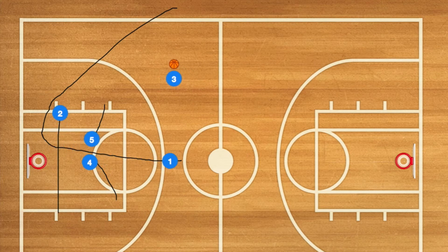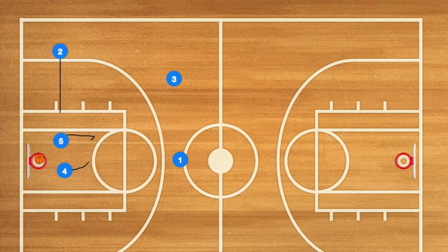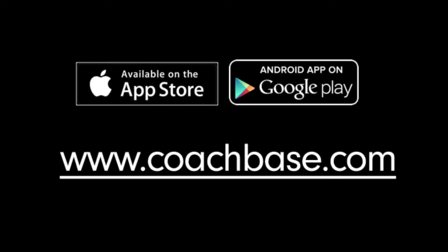Players four and five are going to close in on player one's man to stop him from running through. Player three is going to pass to player one, who's going to shoot, while players four and five collapse in for the rebound.